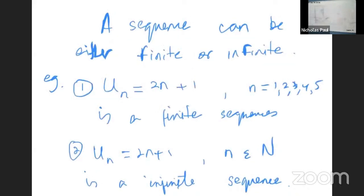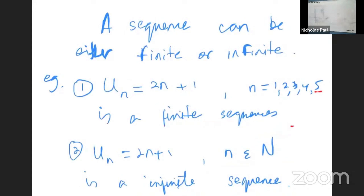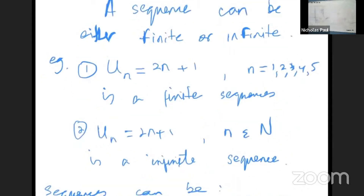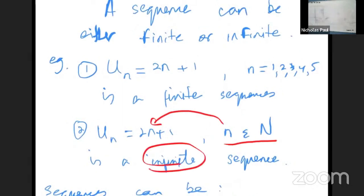If n runs from 1 to 5, that gives you a finite sequence. But there are sequences where n covers all the natural numbers. When n is all the natural numbers and you plug all those values in, you end up with an infinite sequence. So there are two types of sequences: finite and infinite.